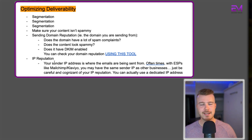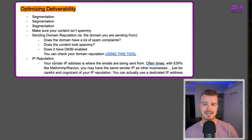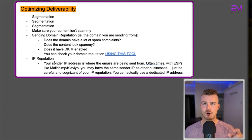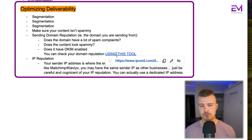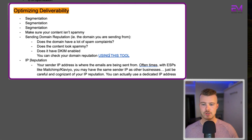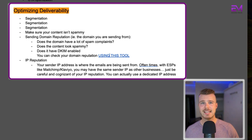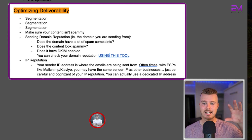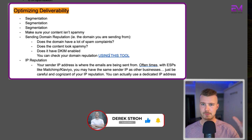Beyond that, check your sending domain reputation. Ask yourself: does the domain get a lot of spam complaints, does the content look spammy, are you frequently sending spammy-looking content from this domain, and does it have DKIM enabled? You can check your domain reputation using a tool called IP Void — just enter your domain in there. Finally, consider your sender IP address reputation. With ESPs like MailChimp or Klaviyo you may share an IP with other businesses, so be aware of your IP reputation. You can also set up a dedicated IP address on those platforms.